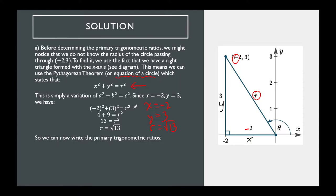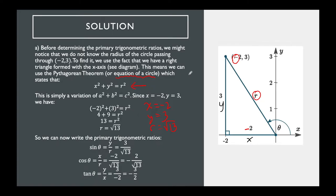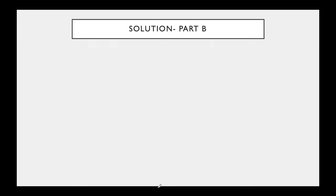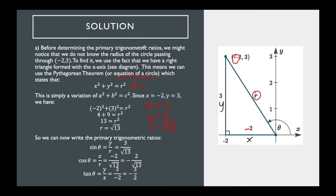Now we can easily find our primary trig ratios by substituting x, y, and r. Sine θ = y/r = 3/√13. Cosine θ = x/r = −2/√13. And tan θ = y/x = 3/(−2) = −3/2.